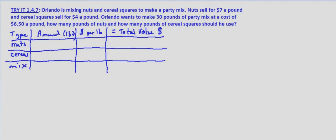We're told that Orlando is mixing nuts and cereal squares to make a party mix. Nuts sell for $7 a pound and cereal squares sell for $4 a pound. Orlando wants to make 30 pounds of the mix at a cost of $6.50 a pound. How many pounds of nuts and how many pounds of cereal squares should he use to get this amount?